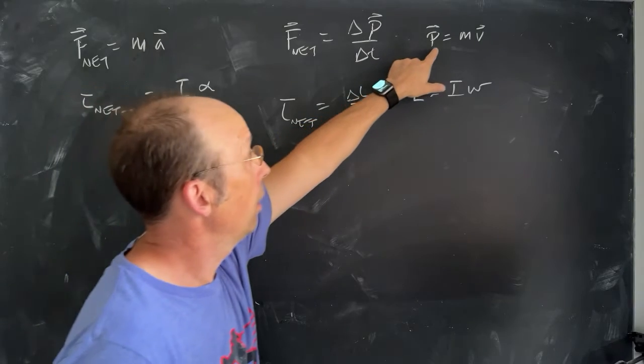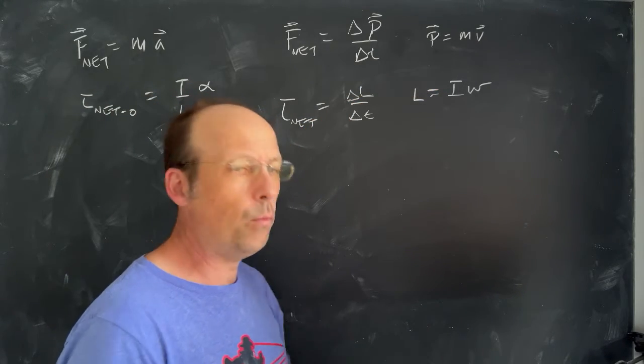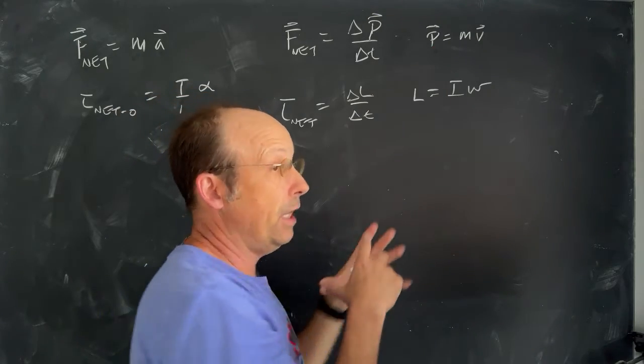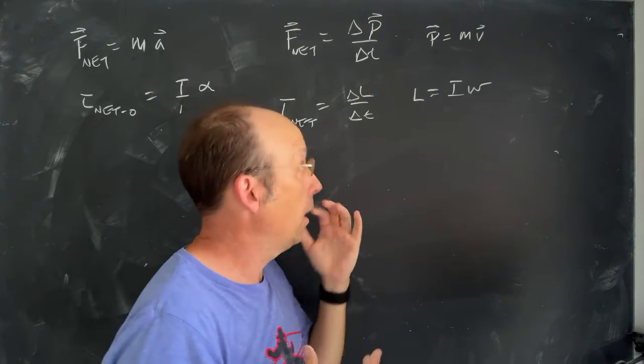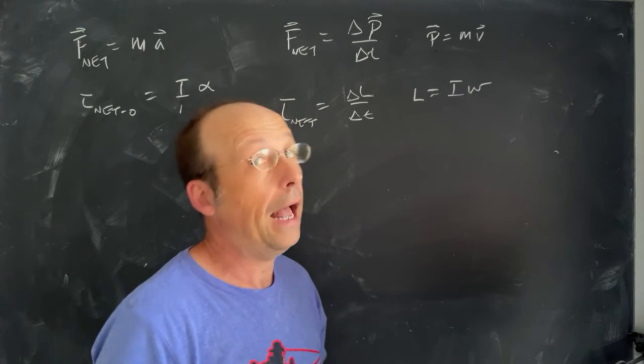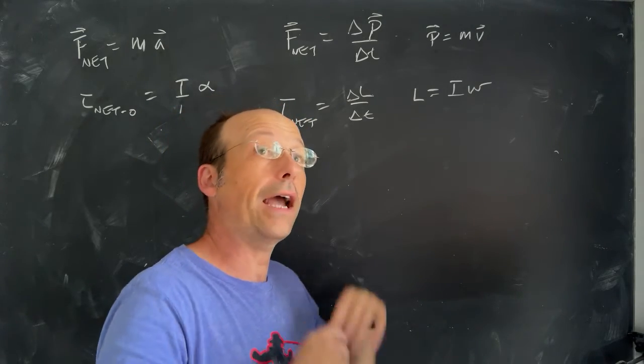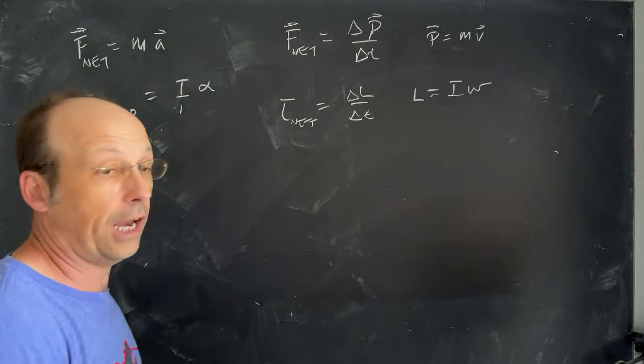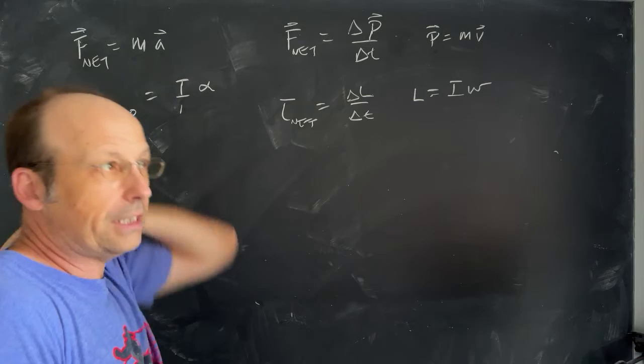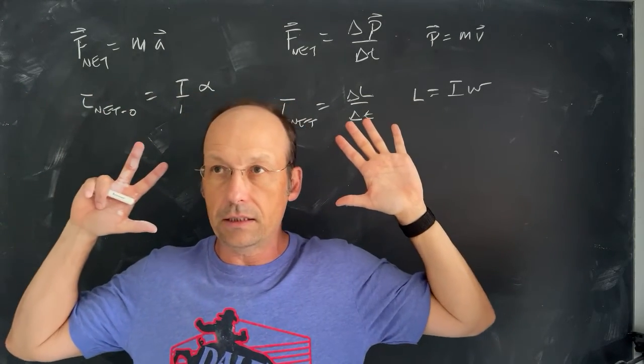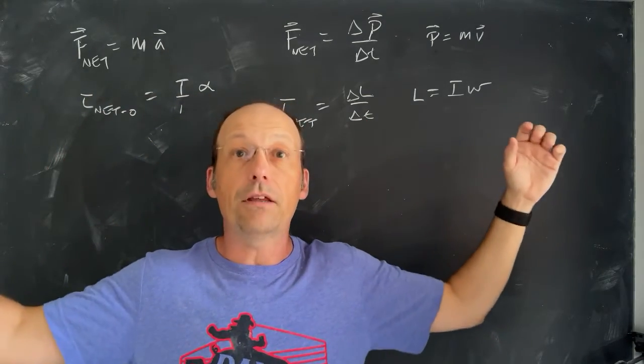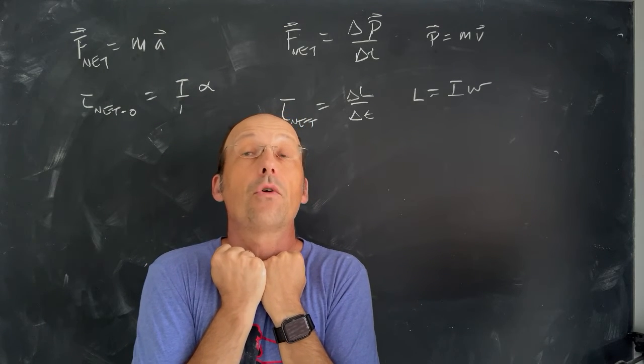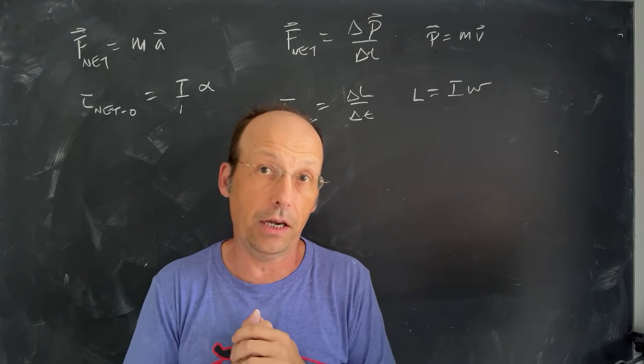Remember, momentum could be conserved. When would momentum be conserved? Momentum is conserved if there's no external forces on our system. Can angular momentum be conserved? Absolutely. If there's no external torque, the angular momentum is conserved. So you can see situations like this. The famous one is that the ice skater spinning, when they move their arms in, they decrease their moment of inertia. And that would, in order to conserve momentum, would increase their angular velocity.